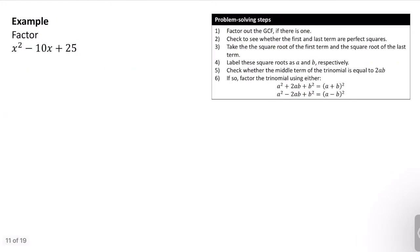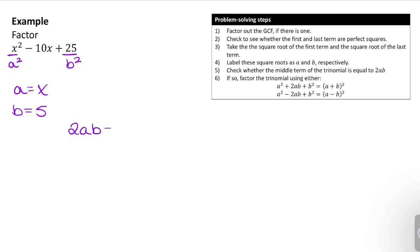Now let's try x² − 10x + 25. x² is a perfect square and 25 is a perfect square, so a equals x and b equals 5. Then 2ab = 2 times x times 5 = 10x, which is our middle term. Notice we have a minus sign here, so we use (a − b)², giving us (x − 5)².